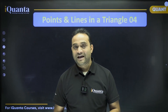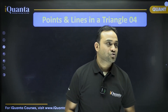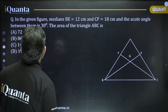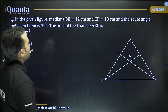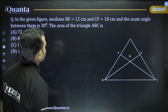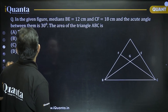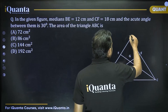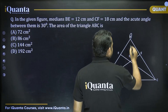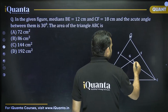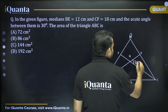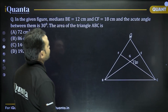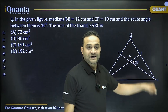Now let's go to the questions. The first question says: in the given figure, median BE is equal to 12, CF is equal to 18 centimeters, and the acute angle between them is 30 degrees. We need to find the area of triangle ABC.